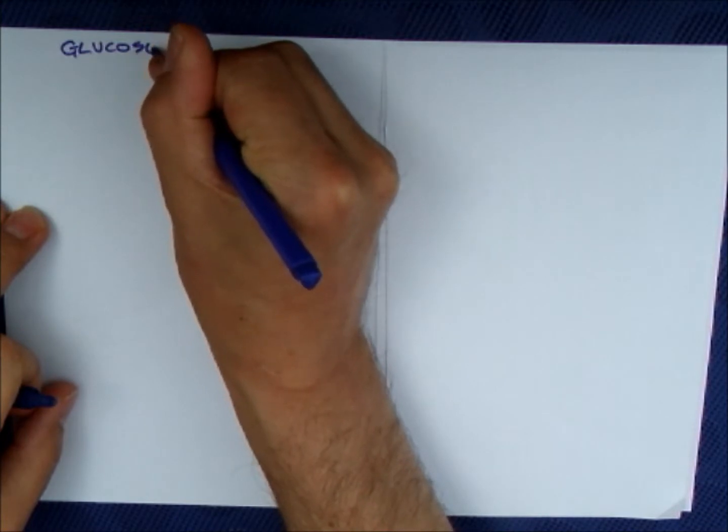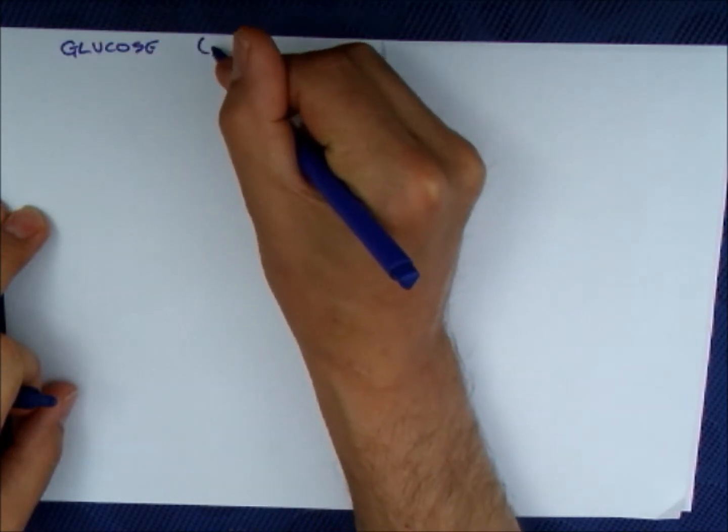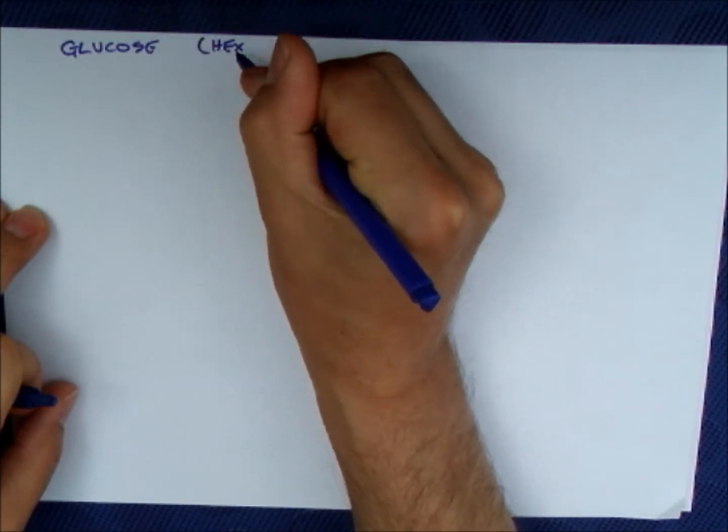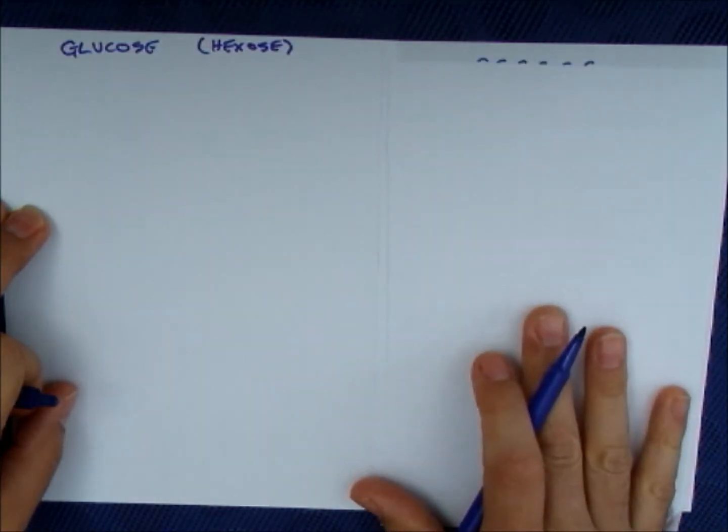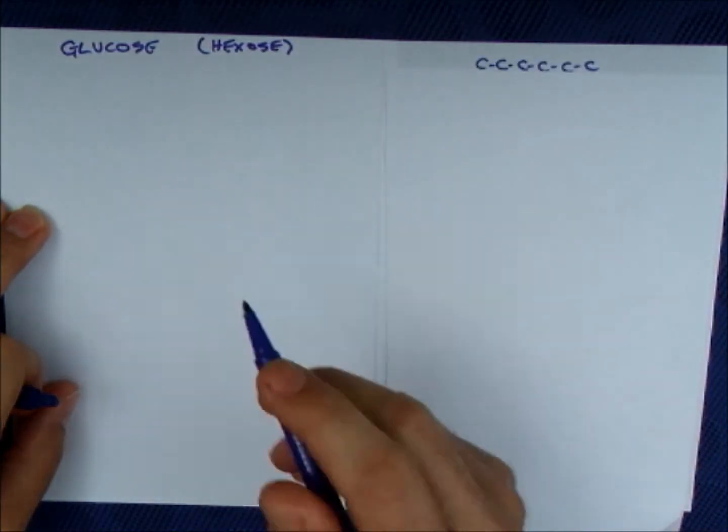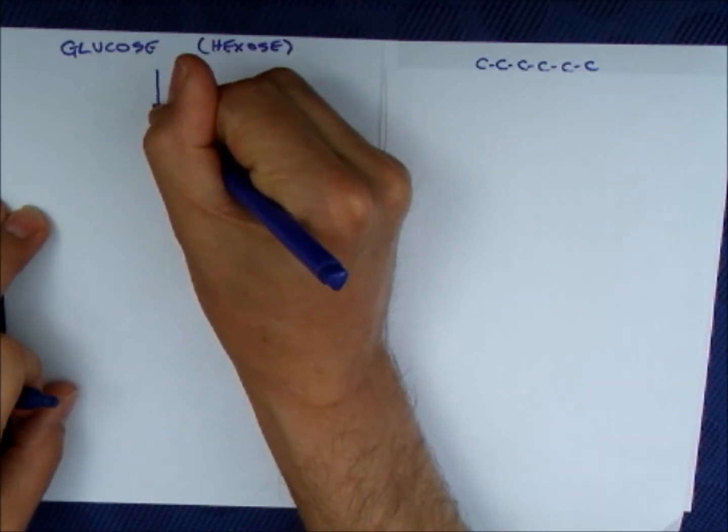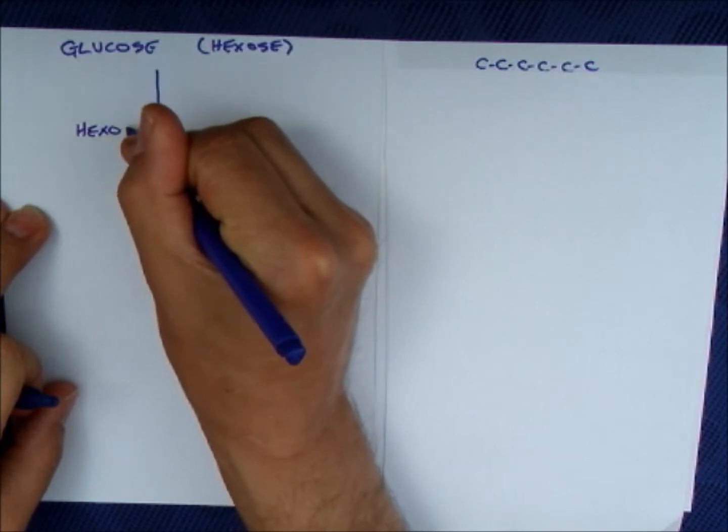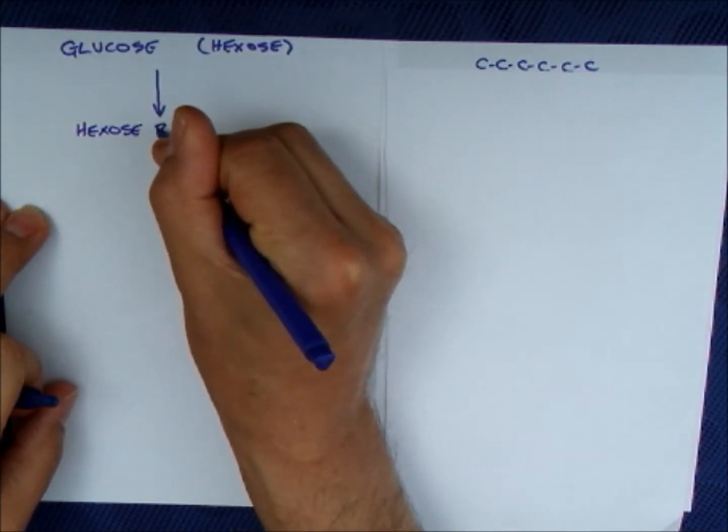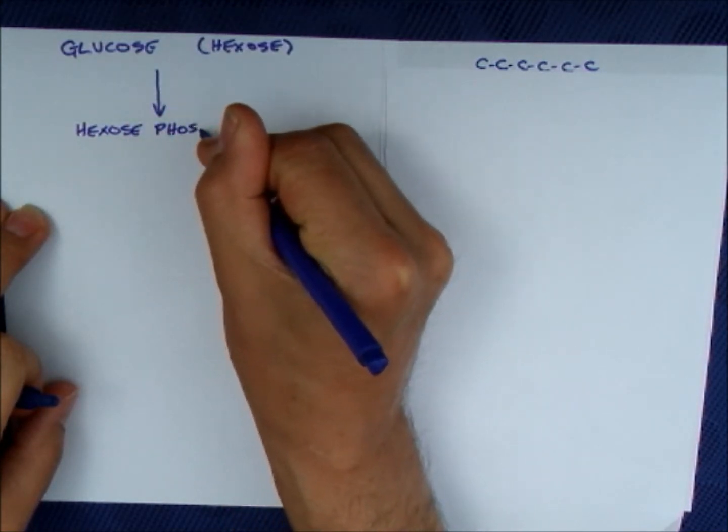So we start with glucose. Glucose has six carbons, so we can give it a generic term of hexose. We do that because glucose is made into isomers, for example fructose, and further down there are other isomers. We don't need to learn all those names, so we'll just call it hexose because there's six carbons.